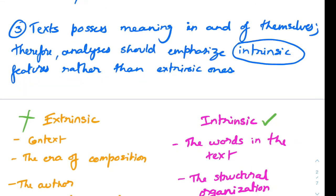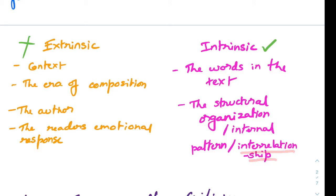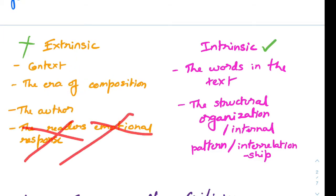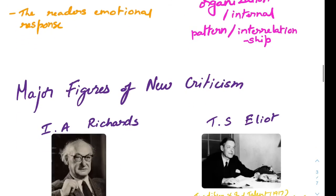When analyzing the text, we look at intrinsic features: the words in the text, the structural organization, internal patterns and interrelationships — rhyme, meter, all those things. What's not important is the context in which it was written, the era of composition, the author — absolutely not important — and the reader's emotional response. What you feel when you read it is also considered extrinsic and not important at all.